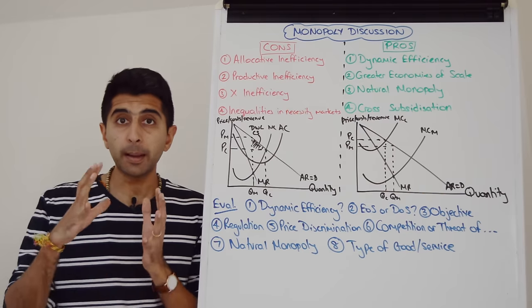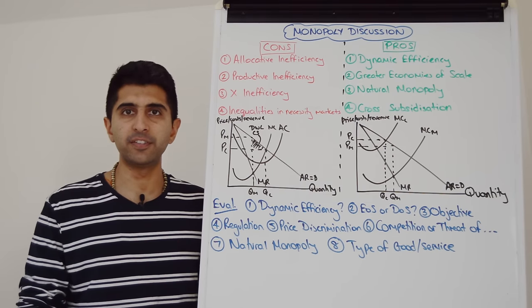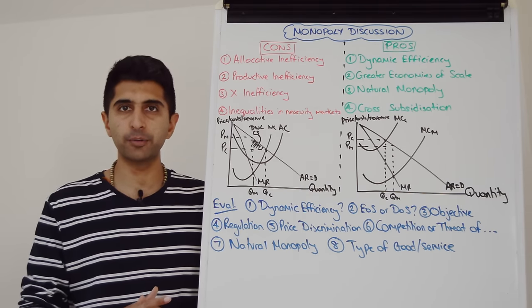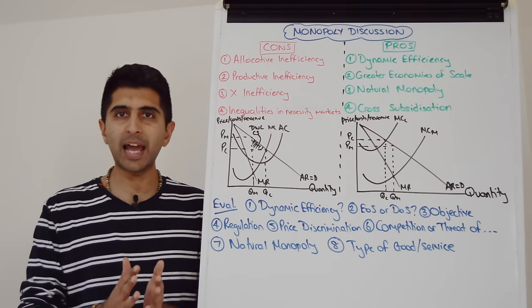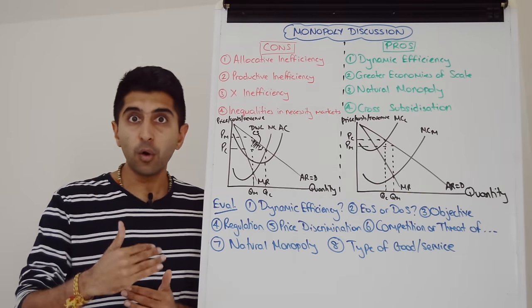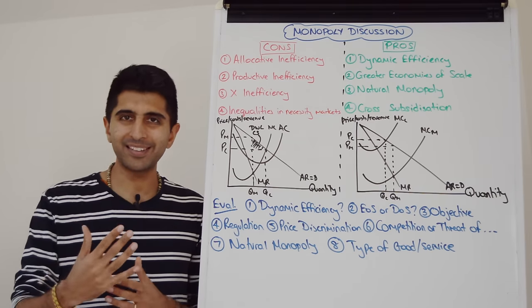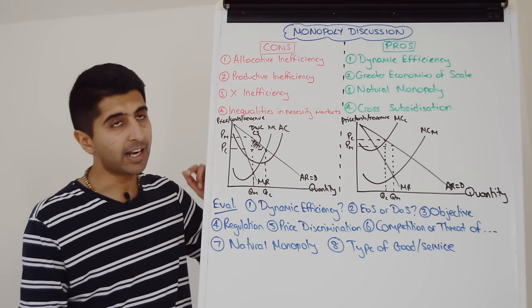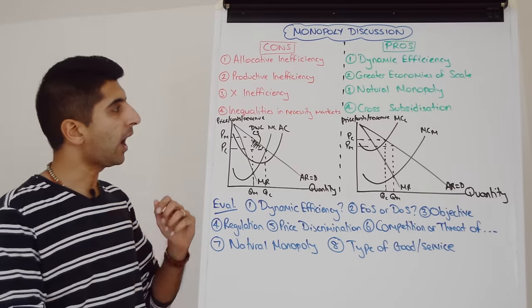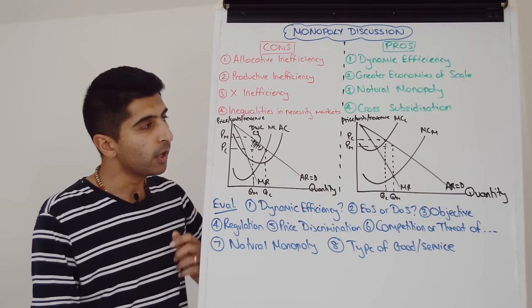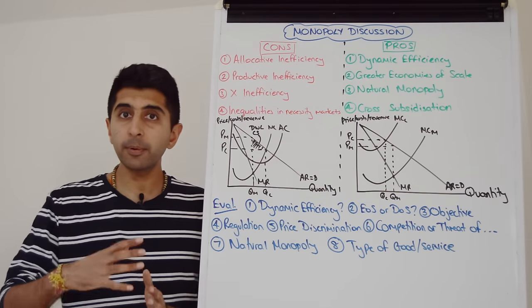We could argue that monopolies are x-inefficient. They allow for waste in their production process, complacency due to a lack of competitive drive, producing beyond their average cost curve, allowing for excess cost to creep in here. Again, another reason for higher prices in highly concentrated markets.